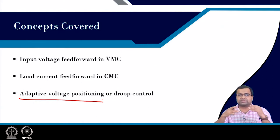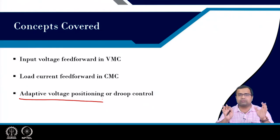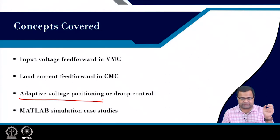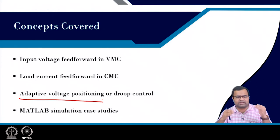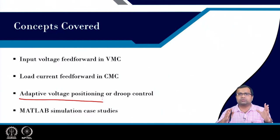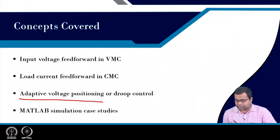Droop control can be used to achieve a nearly purely resistive output impedance, so it can respond to transients almost immediately. We will see this in today's lecture using MATLAB simulation. We want to show MATLAB simulation case studies for input voltage feed forward, load current feed forward, and adaptive voltage positioning.